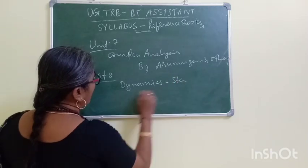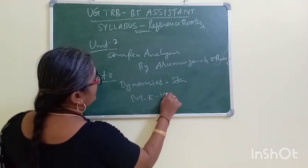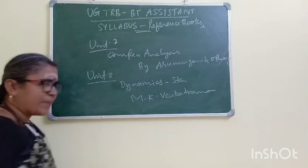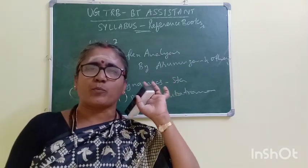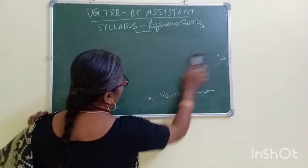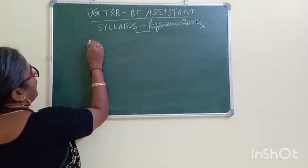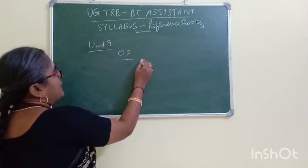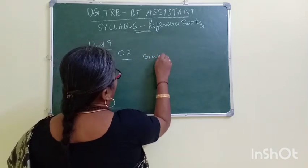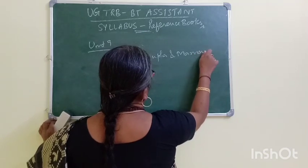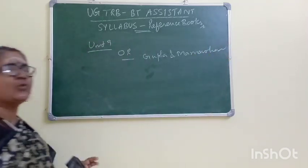Dynamics — here is the choice of Yamk and Vengatrama. If you want to change, you can change the choice. Yamk and Vengatrama is more than Unit 9. Unit 9 is covered by one of three authors' books — Booktah and Manmohan. That is the first book, and there are six books.